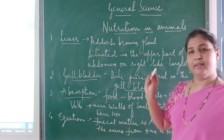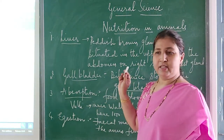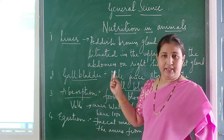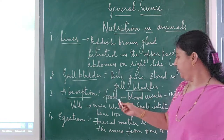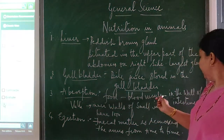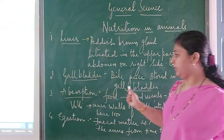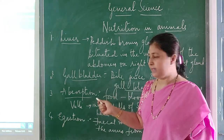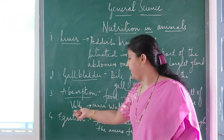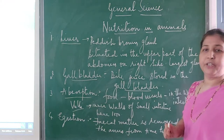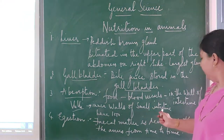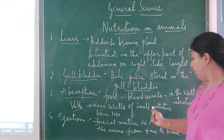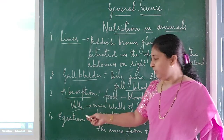Digestion takes place under four processes: absorption, assimilation, digestion, and ejection. What is absorption? The food from the blood vessels goes into the wall of the intestine — there the food is absorbed. Complete digestion takes place in the small intestine. Villi are the finger-like projections which are present in the inner walls of the small intestine.